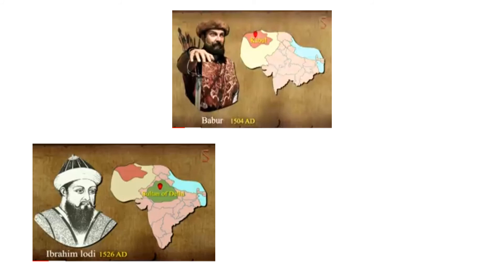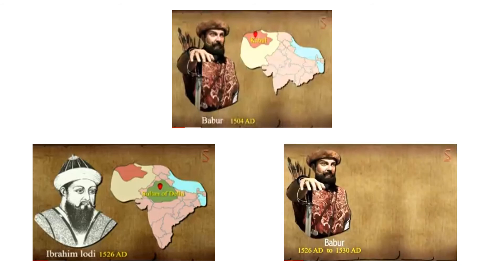Babur sent out spies in every direction to keep track of Lodi's movements. This paved the way for the establishment of the mighty Mughal Empire in India. In the Battle of Khanwa in 1527, Rana Sangha was the mighty ruler of Mewar.